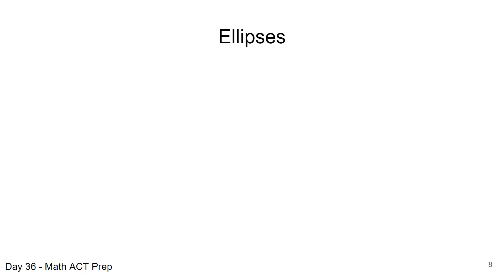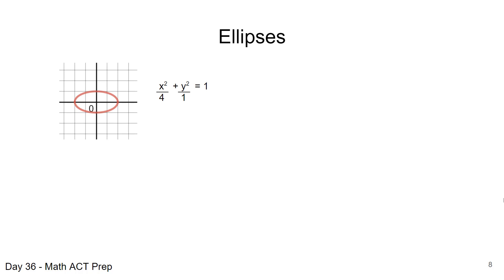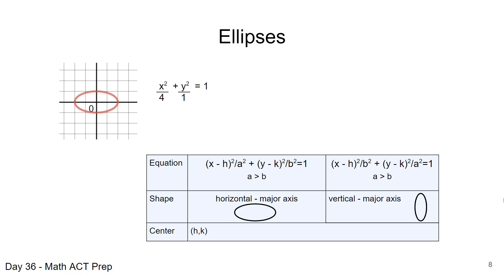The next conic section is the ellipse. An ellipse is very similar to a circle but more elongated, either horizontally or vertically. In the example shown, the ellipse is elongated along the horizontal axis — that is the major axis. The equation is x squared over 4 plus y squared over 1 equals 1. When the denominator under the x term is larger, we have a horizontal major axis; when the larger denominator is under y squared, the major axis is vertical.